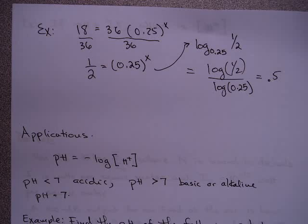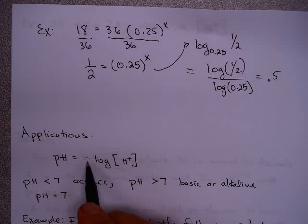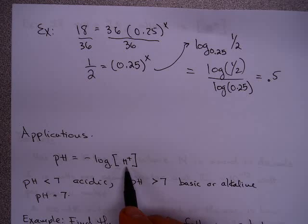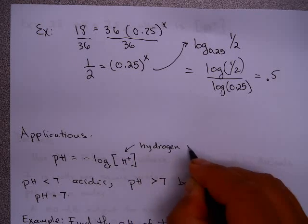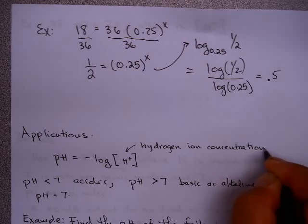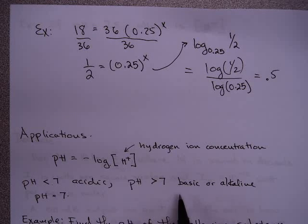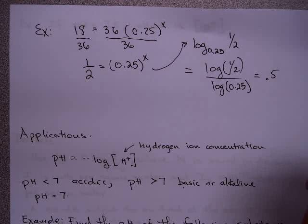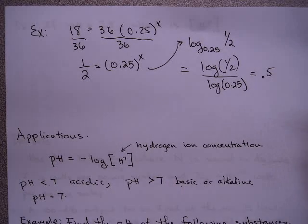Now what are some applications? There are numerous applications of logarithms; we'll look at a few. One comes from chemistry: the notion of pH. The formula is pH = −log[H⁺], where log means log base 10 and H⁺ is the hydrogen ion concentration. If pH is less than 7, the substance is an acid; if pH is greater than 7, it is a base or alkaline; and pH = 7 corresponds to neutral, like distilled water.